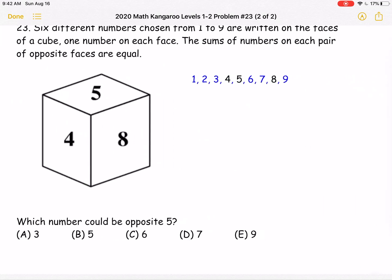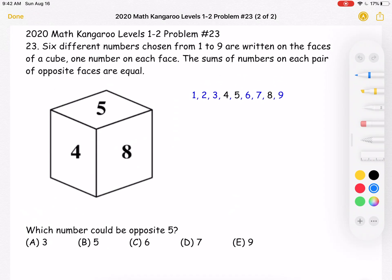And here is where we'll be doing the solution. To start, we know that we are choosing six different numbers from 1 to 9 and writing one number on each face, such that the sums of the numbers on each pair of opposite faces are equal. So I've written the numbers 1 through 9 here because those are the numbers we're choosing from. And I've written the 4, 5, and 8 in black because they already appear on the cube. So we have to choose from the blue numbers.